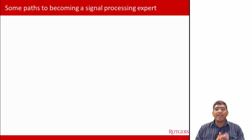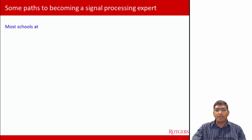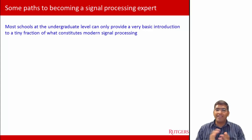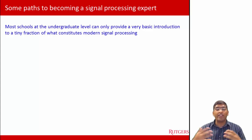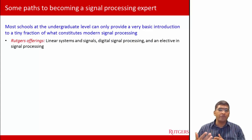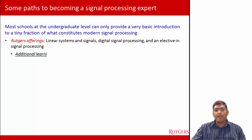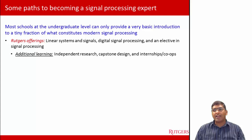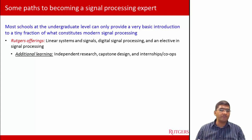So how do you become an expert in signal processing? Most schools at the undergraduate level can only provide a basic introduction to a tiny fraction of what modern signal processing is, because it is a huge area. At Rutgers, for example, the courses offered are linear systems and signals, digital signal processing, and an elective in signal processing covering more advanced topics. Students can also learn through independent research, capstone design, internships, and co-ops.